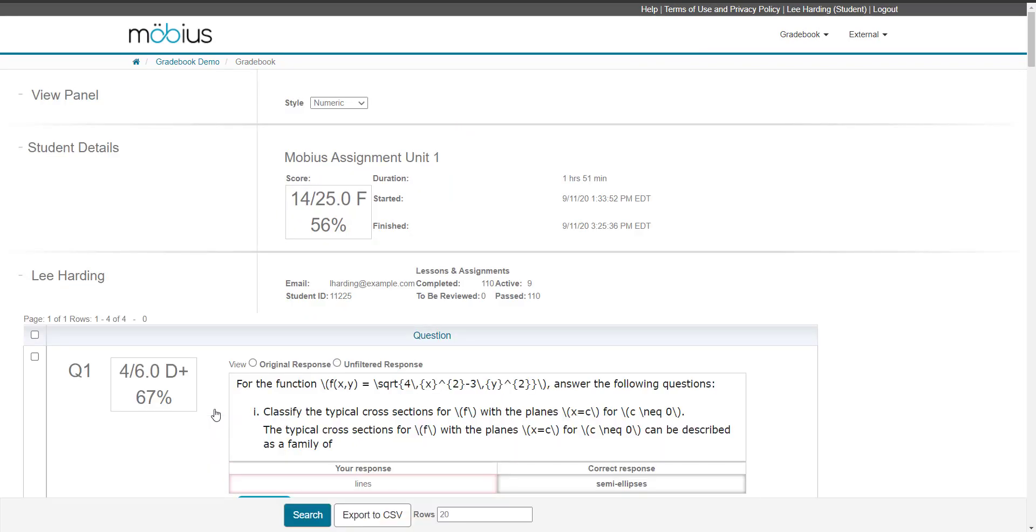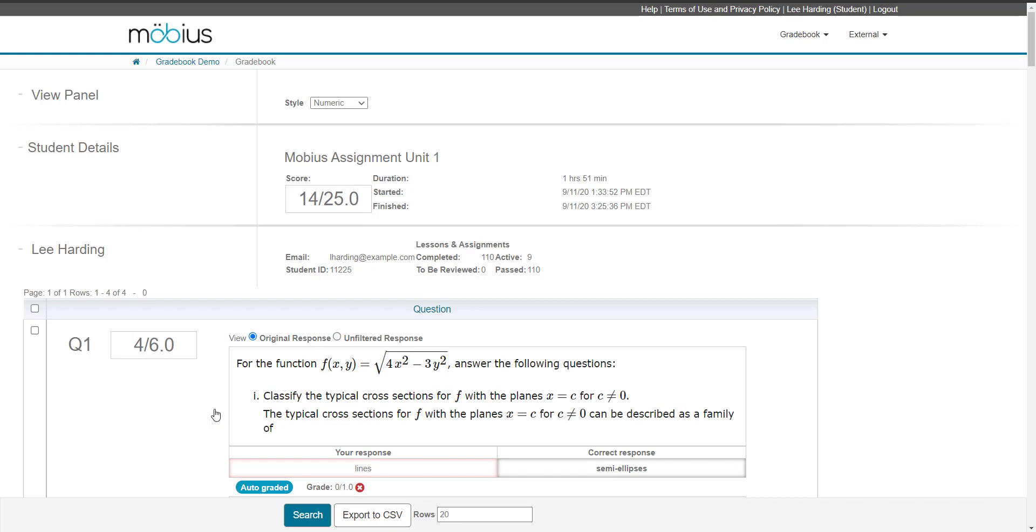Clicking on the details link takes you to the activity details page which is an in-depth look at your selected attempt at an activity. Different information is displayed in different panes on the activity details page.